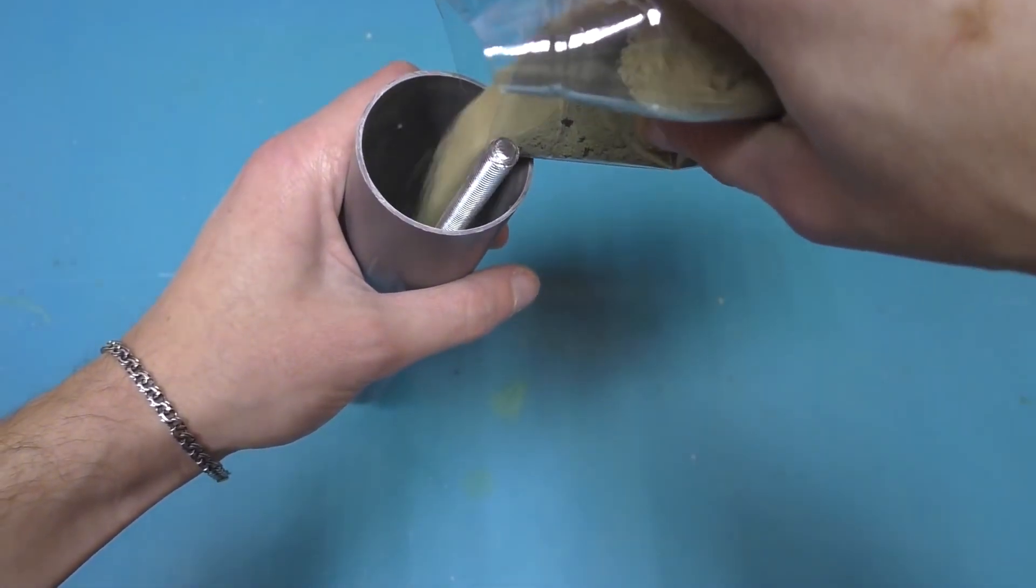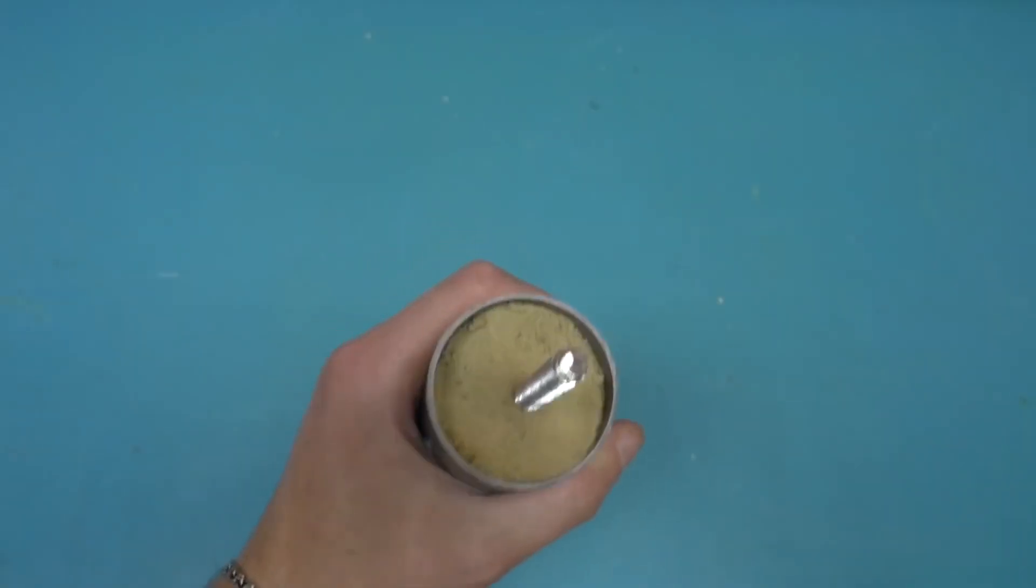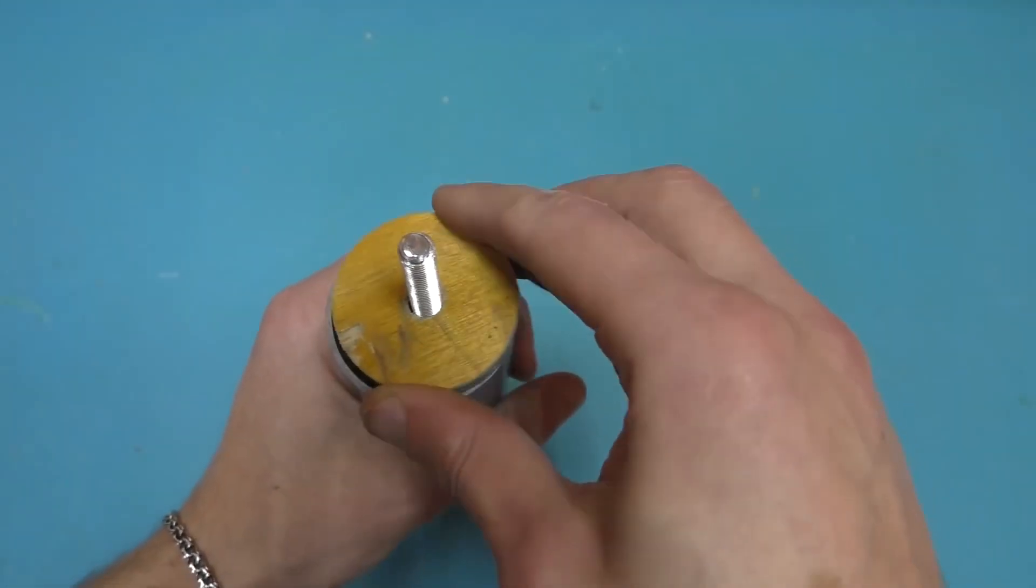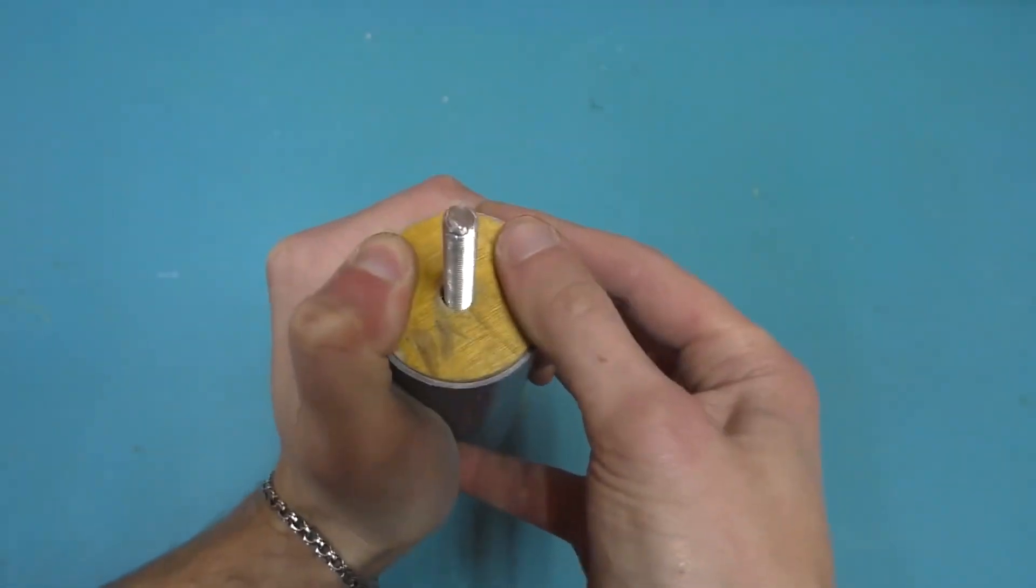And after that, fill the pipe completely with sand, packing it down well. From the other side, also put a circle and tighten all of this using a washer and nut.